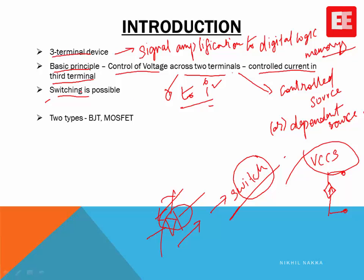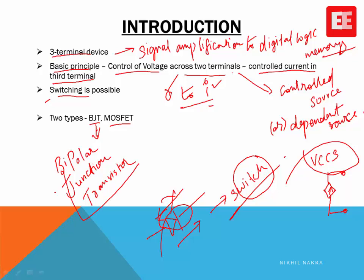Three-terminal semiconductor devices are fundamentally classified into two categories: BJT and MOSFET. BJT stands for Bipolar Junction Transistor. However, in this course we are not going to discuss BJT — the hero of our course is the MOSFET. The full form of MOSFET is Metal Oxide Semiconductor Field Effect Transistor.